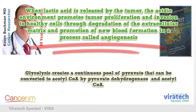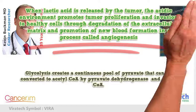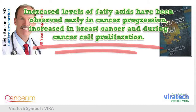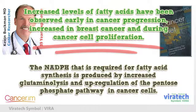Glycolysis creates a continuous pool of pyruvate that can be converted to acetyl-CoA by pyruvate dehydrogenase. Increased levels of fatty acids have been observed early in cancer progression, increased in breast cancer and during cancer cell proliferation. The NADPH that is required for fatty acid synthesis is produced by increased glutaminolysis and upregulation of the pentose phosphate pathway in cancer cells.